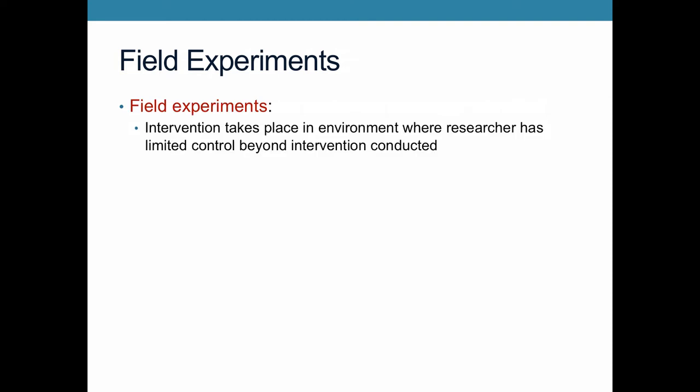Another kind of experiment we see in political science are field experiments. Field experiments are experiments done in an environment where the researcher has really limited control beyond the intervention that they have conducted — they're happening in the field, in the real world.